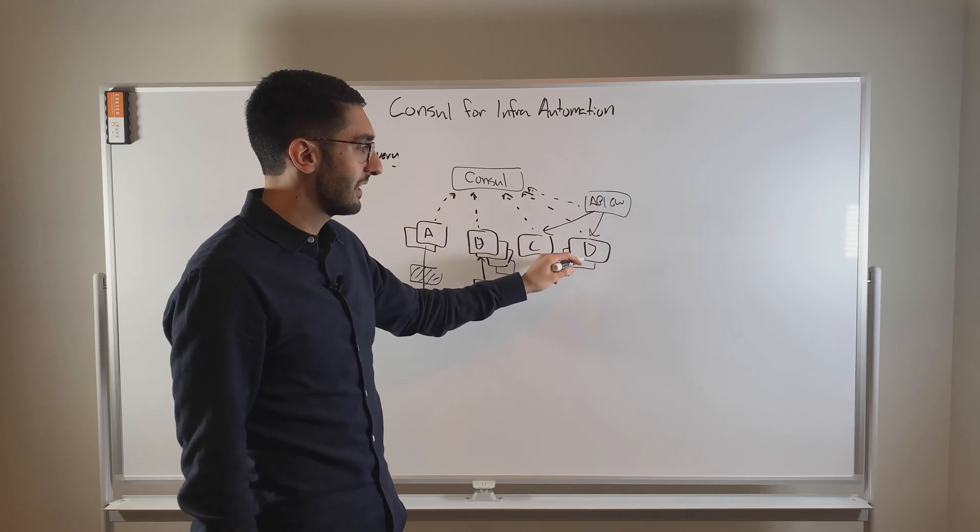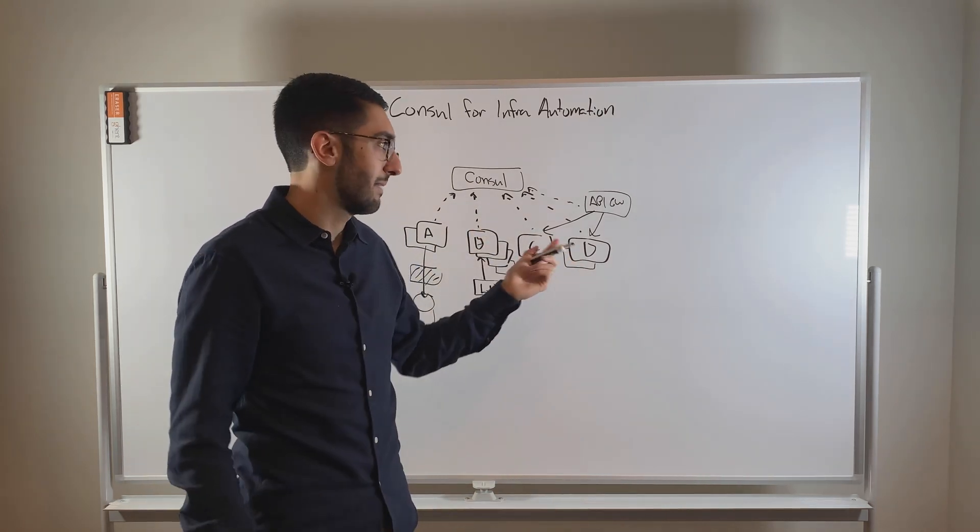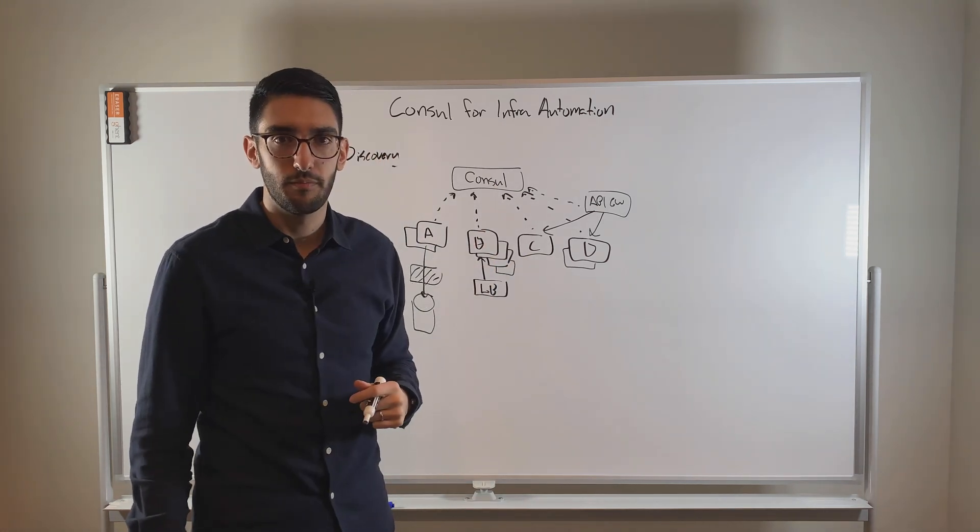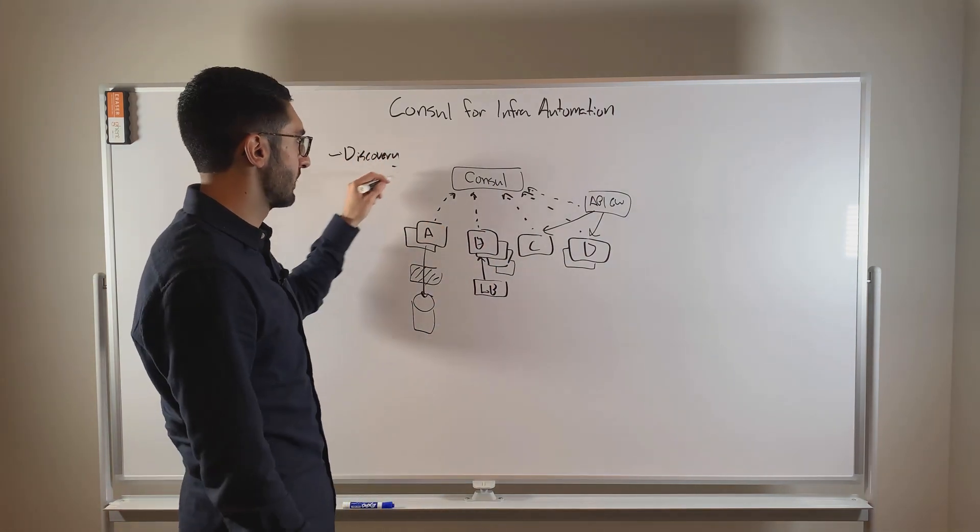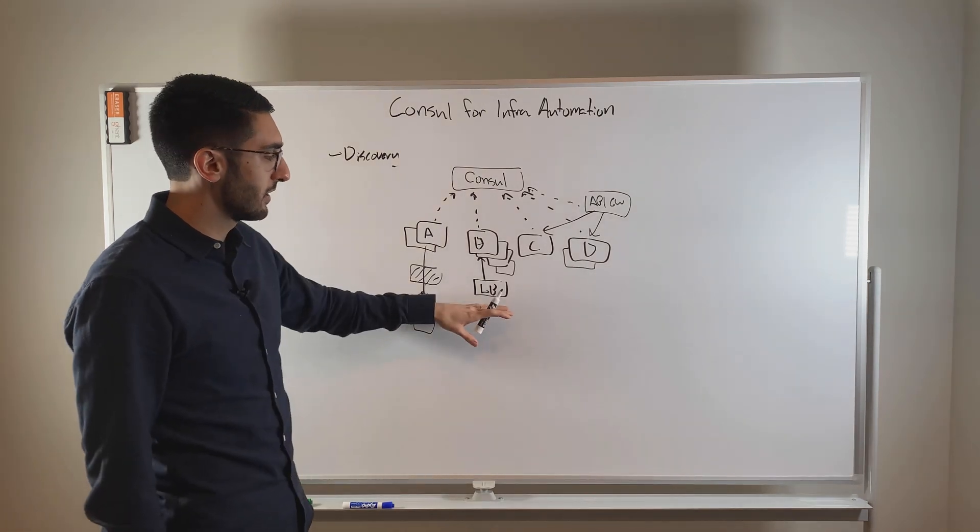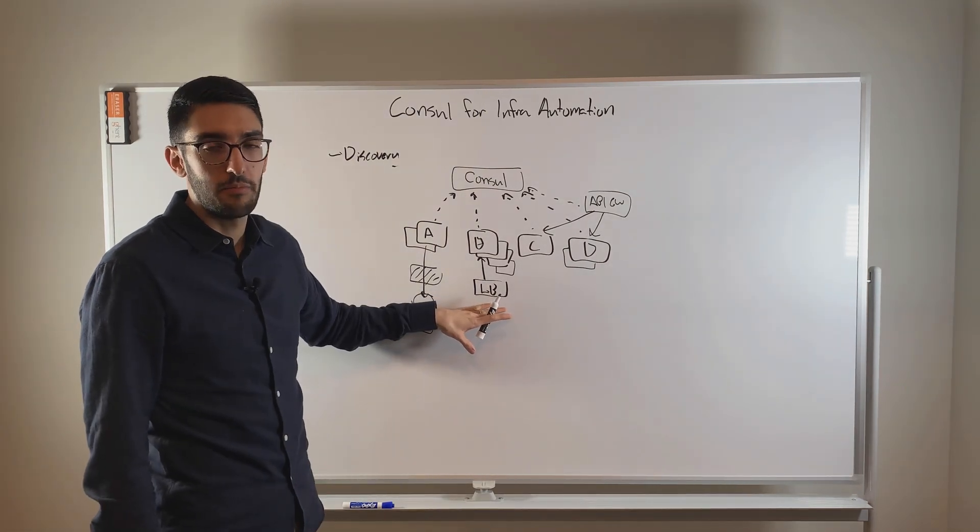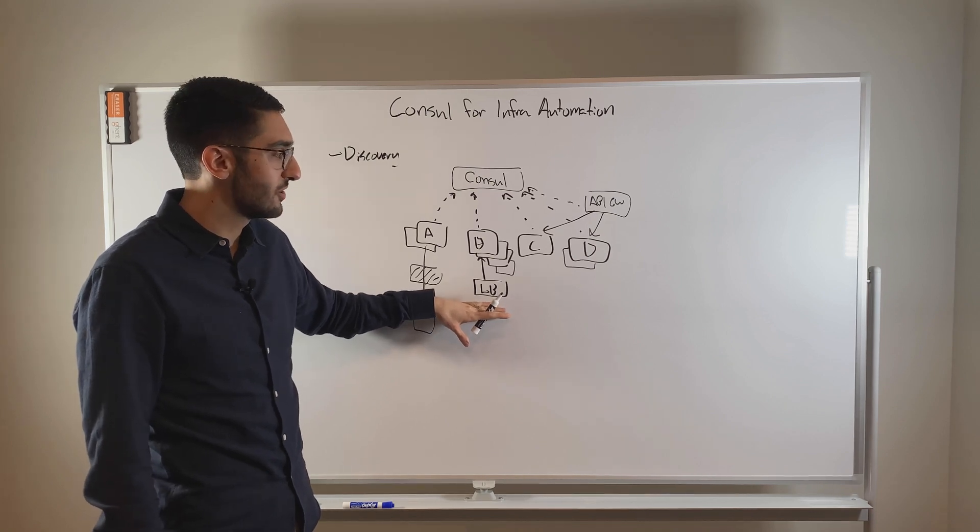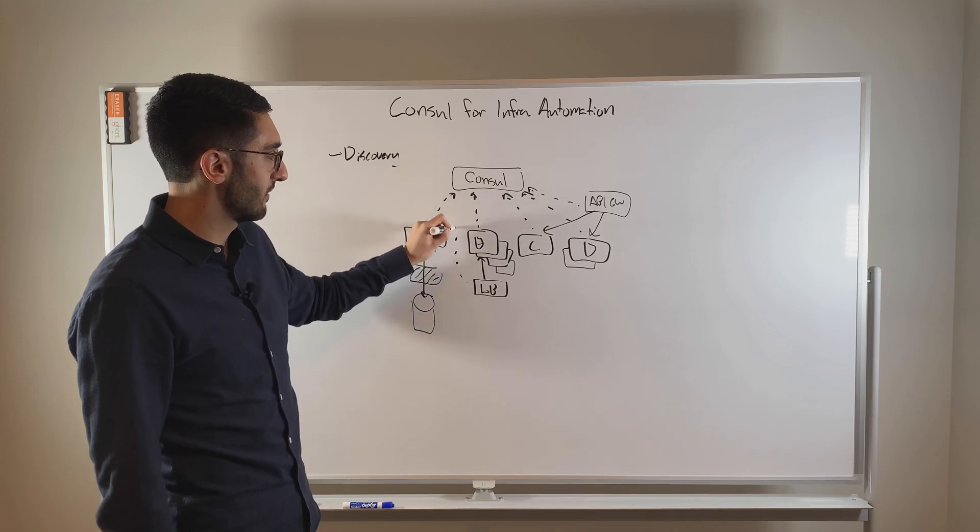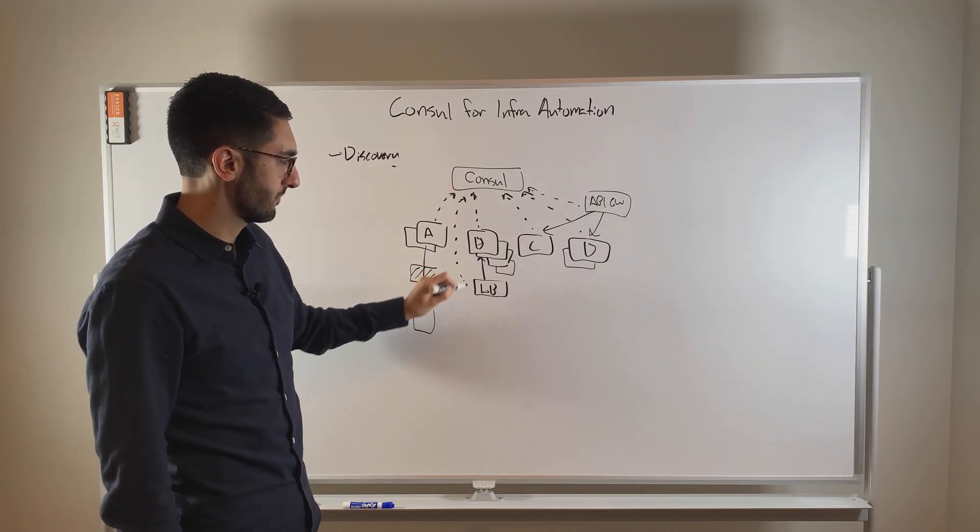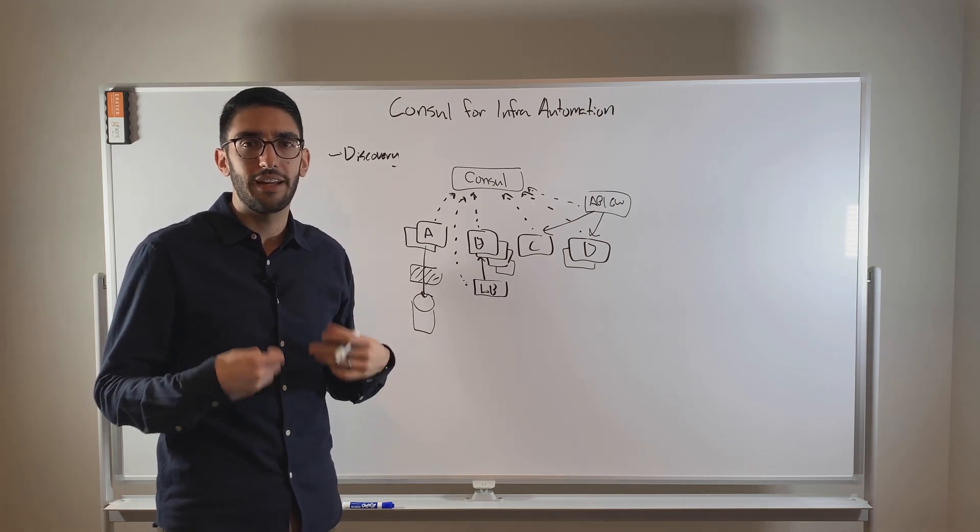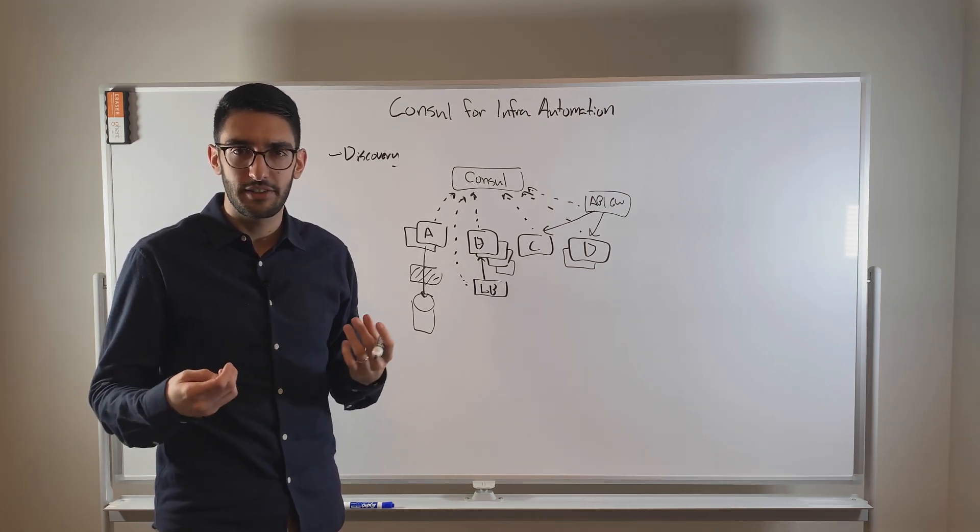And now if I scale up D, I don't need to file a ticket to manually update the API gateway. It automatically gets it by virtue of just querying Consul and treating it as the service discovery service registry. Similarly, maybe if I'm using a modern load balancer, maybe I'm using NGINX as an example, it can also query Consul and do the same sort of thing. And so this makes sense if I have these more modern appliances, they might be Consul aware, they can do this more dynamic discovery.